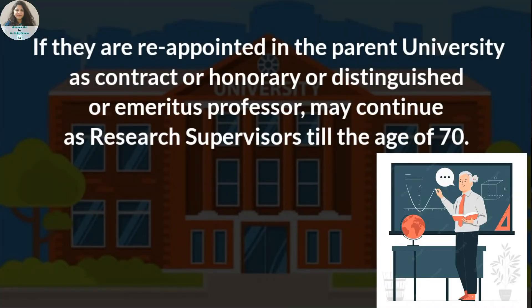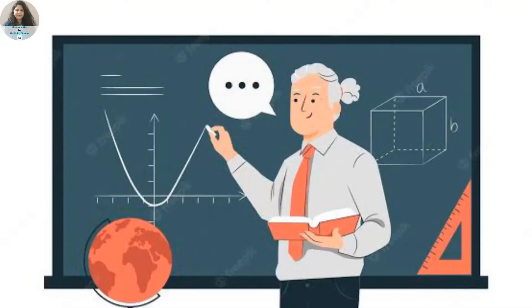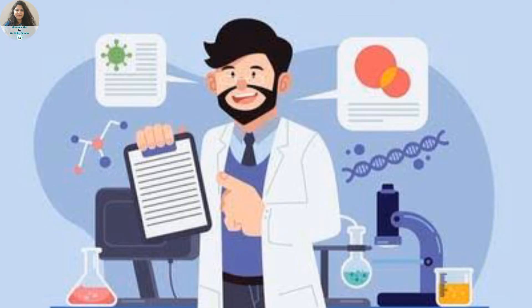If after superannuation your parent university gives you an honorary professor position, an emeritus professor position, or brings you back on contract, then you can continue to supervise students up till the age of 70 years. Of course, the university has to ensure that you have sufficient research experience in that area, you are physically fit, and there should not be any financial compensation given to any research supervisor.